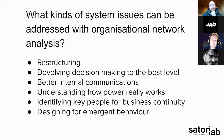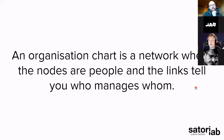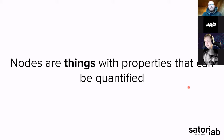Some basic definitions: a network is a collection of nodes and links — two dots, one line between them, that's a network. An organization chart is a network where nodes are people and links tell you who manages whom; it's valid but very low-information. Nodes are things with properties that can be quantified — in organizational context we're usually talking about people who can have both quantitative and qualitative data. For example, Alice has been with the company ten years, Bob for five — that's a 'time served' attribute. Links are connections between nodes and also have properties; for instance, the frequency of communication between two people can be encoded in the relationship data.